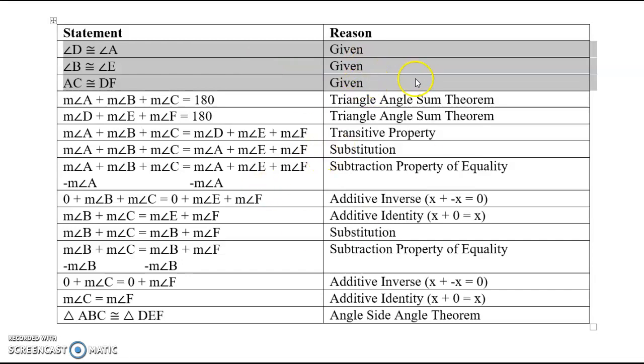But then what do we do with that given information? Well, after we did our fancy triangle sum and transitive property stuff, we were able to do this substitution step over here.